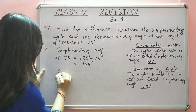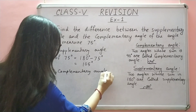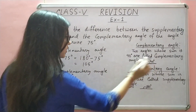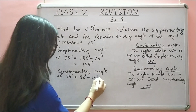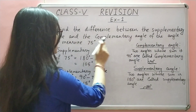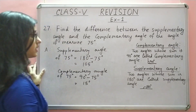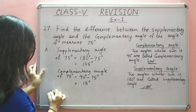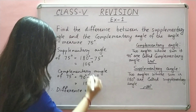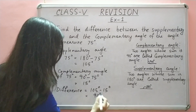Abhi next, complementary angle of 75 degrees. Complementary angle: 90 degrees. Toh 90 degree se minus ho jayega. Toh kya aayega? 15 degree. Abhi difference nikalna hai — supplementary angle of 75 degree 105 hai, aur complementary angle of 75 degree 15 degree hai. Toh ab minus ho jayega, means difference. So, difference is equal to 105 degree minus 15 degree = 90 degree.